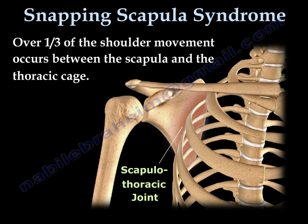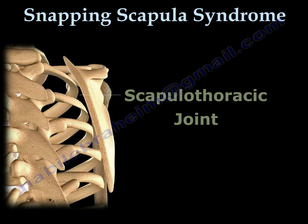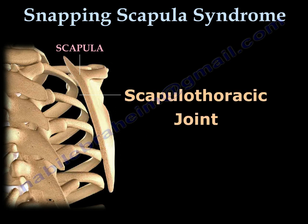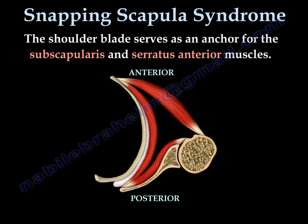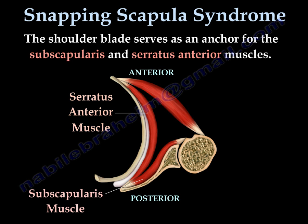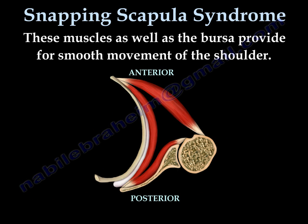Over one-third of the shoulder movement occurs between the scapula and the thoracic cage. You can see the bursa underneath the scapula, protecting the movement of the shoulder between the scapula and the thoracic cage. The shoulder blade serves as an anchor for the subscapularis and serratus anterior muscle. These muscles, as well as small bursa, provide for a smooth movement of the shoulder.